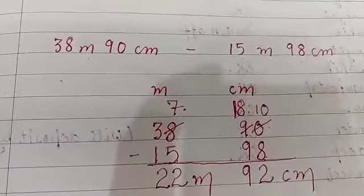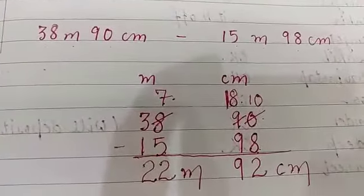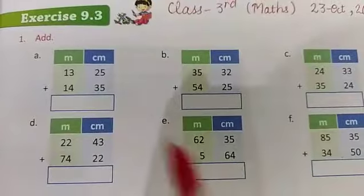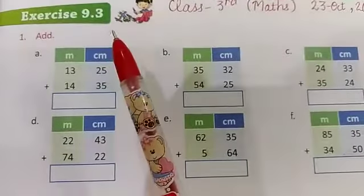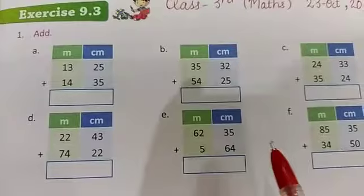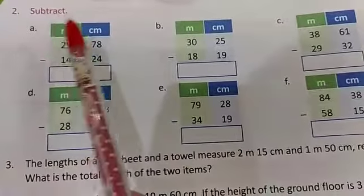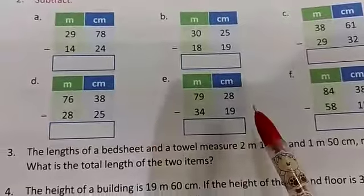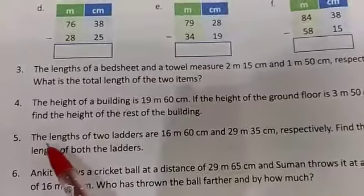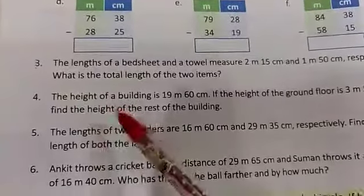So this is how we do addition and subtraction of two different lengths. I hope this topic is clear. In exercise 9.3, the first part has addition questions, and the second part has subtraction questions. After that there are four word problems. Let's read the word problems and understand what needs to be done.